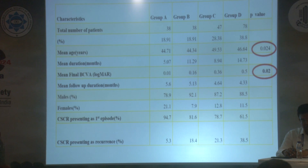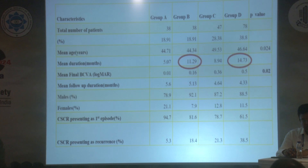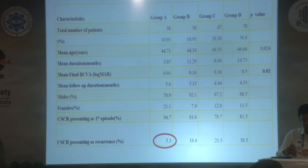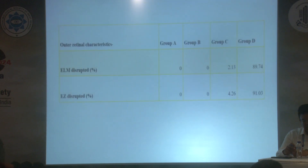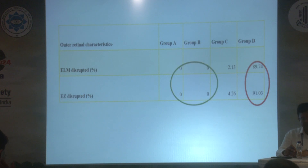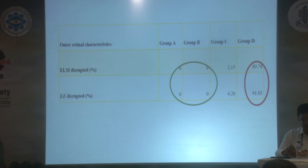Significant difference in mean age was seen across the four groups. Significant difference was also seen in final visual acuity, with the worst visual acuity in Group D, the complex pachycoroid group. Duration of disease was maximal in Group D, followed by Group B — both pachycoroid groups. Cases presenting as recurrences were minimal in Group A and maximum in Group D. Ellipsoid zone disruption and external limiting membrane disruption were maximal in Group D, but no such cases were seen in Groups A and B.